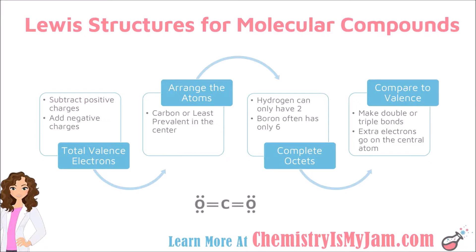Once you have totaled your valence electrons, you are going to arrange the atoms. Typically, carbon goes in the middle, or whichever atom you have the least of goes in the middle. At that point, you complete octets by making sure every atom has 8 electrons around it. The exceptions are that hydrogen can only have 2 electrons around it, and boron is often happy with just 6 electrons around it.